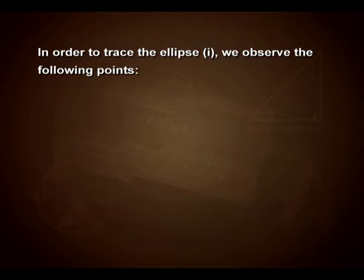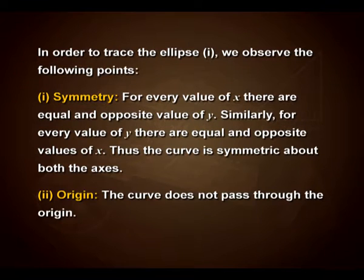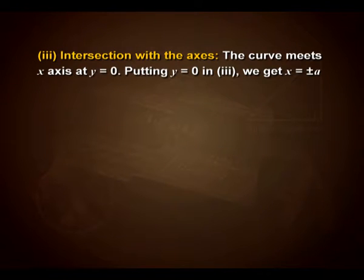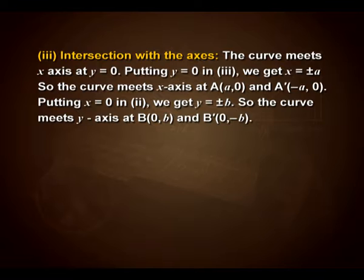In order to trace the ellipse, we observe the following points. For symmetry: for every value of x there are equal and opposite values of y, and similarly for every value of y there are equal and opposite values of x. Thus the curve is symmetric about both axes. The curve does not pass through the origin. For intersection with the axes: the curve meets the x-axis where y = 0, giving x = ±a, so it meets the x-axis at A(a, 0) and A'(−a, 0). Putting x = 0, we get y = ±b, so it meets the y-axis at B(0, b) and B'(0, −b).